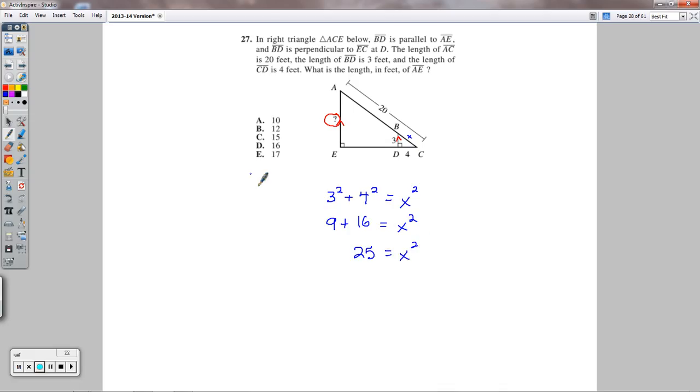If you take the square root of both sides, you arrive at your value for X, which is the same as BC. That is going to be 5. So BC equals 5. If we look at the picture, we notice that this is 5.